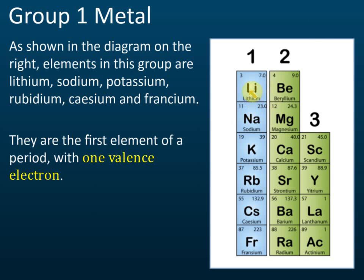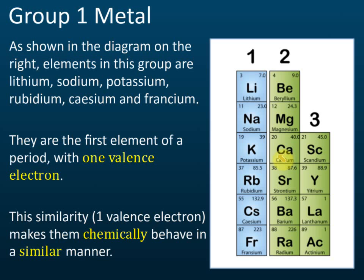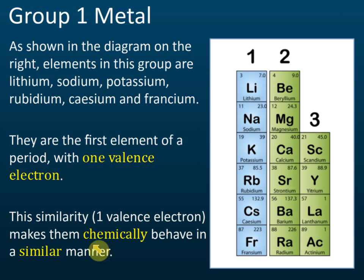All group one metals have one valence electron. Their electron arrangements are 2,1 then 2,8,1 then 2,8,8,1. Since they have the same number of valence electrons, they behave in a similar manner chemically — they have the same chemical properties.